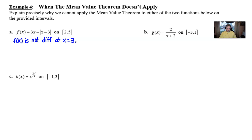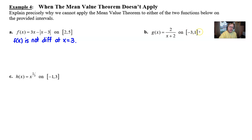Take a look at part B. We have g(x) = 2 over (x + 2). Immediately your eyes should be drawn to that denominator, x + 2 — a red light goes off saying x can't be negative 2. Double check: you'll see that negative 2 is a member of this domain, and so that's the reason why we're not going to proceed any further. g(x) is not continuous at x = -2.